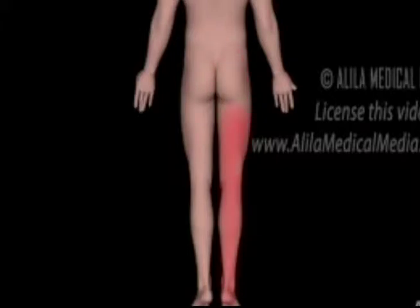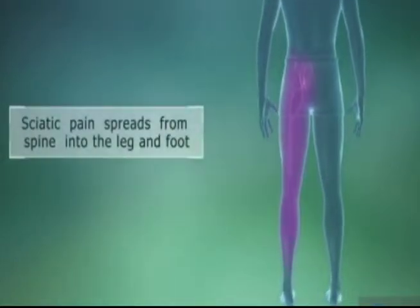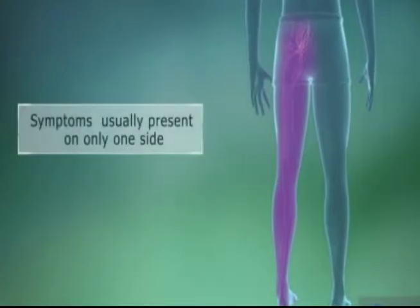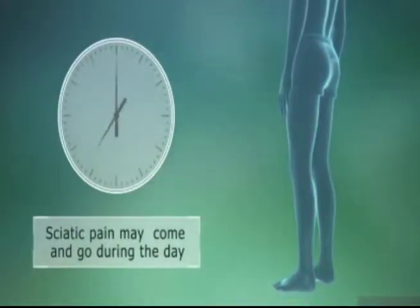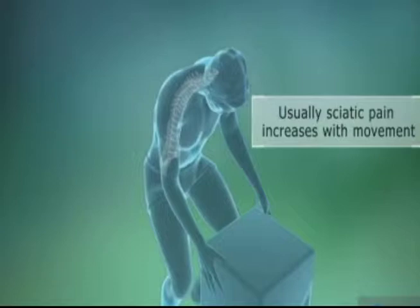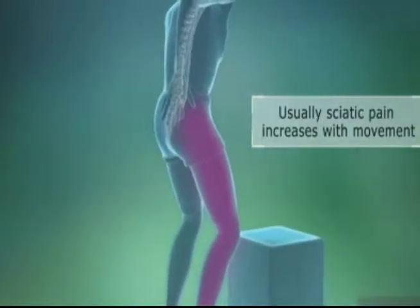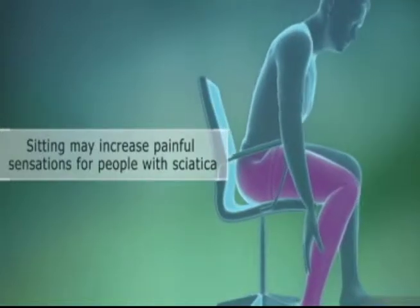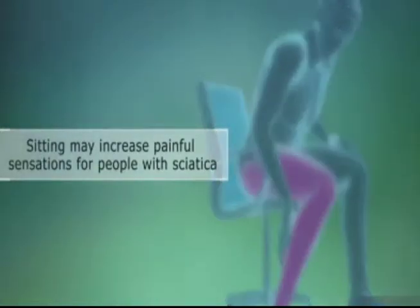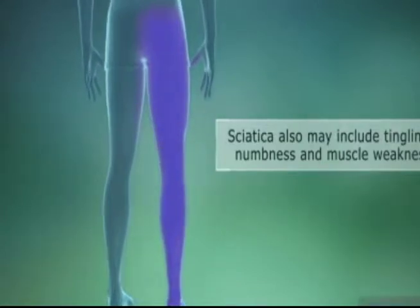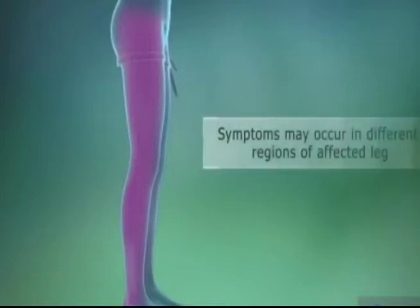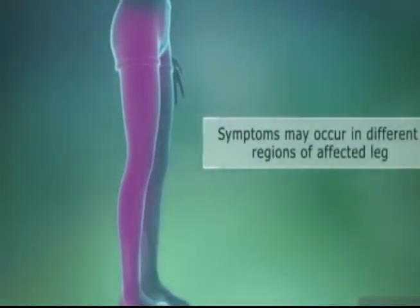El dolor que se extiende desde la parte baja de la columna vertebral hacia los glúteos y hacia abajo de la parte posterior de la pierna es la característica distintiva de la ciática. Podría sentir el malestar casi en cualquier parte a lo largo del recorrido del nervio. El dolor puede variar desde leve hasta una sensación aguda de ardor o dolor insoportable, a veces como una descarga eléctrica. Puede empeorar al toser, estornudar o permanecer sentado por periodos prolongados, y por lo general afecta a un solo lado del cuerpo. Algunas personas también tienen entumecimiento, hormigueo o debilidad muscular en la pierna o el pie afectado.